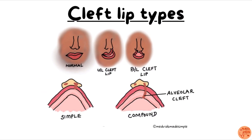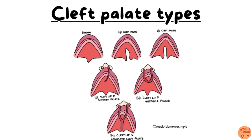Now let's see about the types of cleft lip. In the first picture you see a normal lip. In the second picture there is a unilateral cleft lip, caused by defective fusion of the maxillary eminence with the medial nasal process on one side. In bilateral cleft lip, there is defective fusion on both sides. Cleft lip can also be classified as simple or compound based on alveolar involvement — if the tooth socket (alveolus) is involved it is compound type; if not, it is simple type.